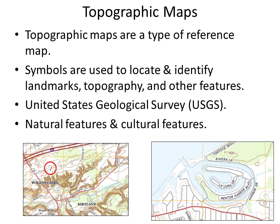Topographic maps are a type of reference map. Symbols are used to locate and identify landmarks, topography, and other features. In the United States, topographic maps are created by the United States Geological Survey. They include both natural features and cultural features. You can see two examples from the Mentor area here in Northeast Ohio, where we can see the cultural feature on the map circled in red — that's Lakeland Community College, one of the map symbols for a school.